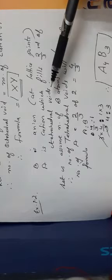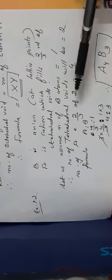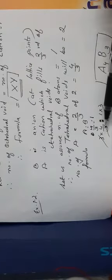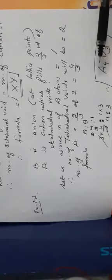To summarize: assume the number of B items is 1, then tetrahedral voids will be double, giving 2. Two-thirds of 2 is 4/3. The ratio becomes 4/3 : 1, and multiplying through by 3 gives the compound formula A₄B₃. You need to know which is the cation and which is the anion and where to write each in the formula. Thank you.